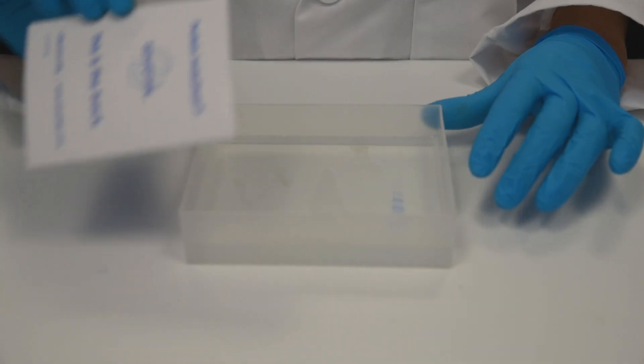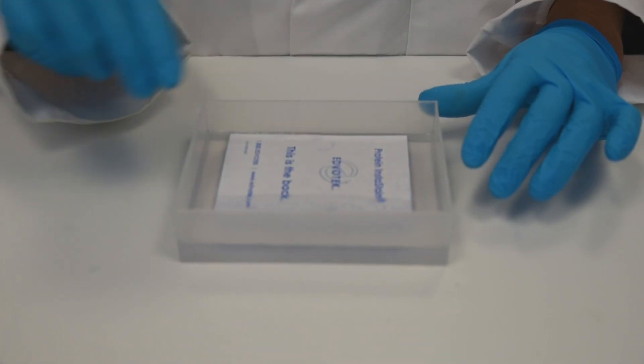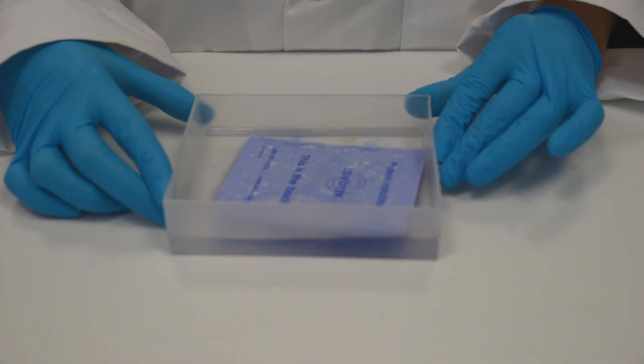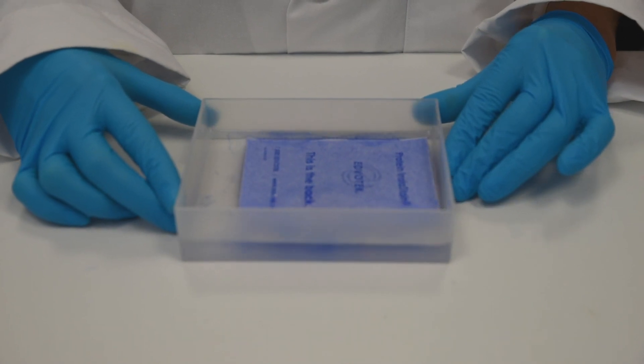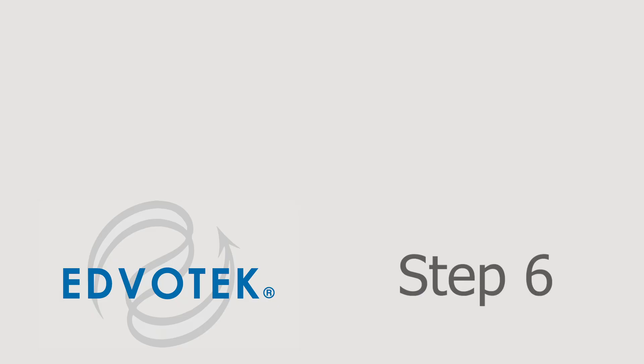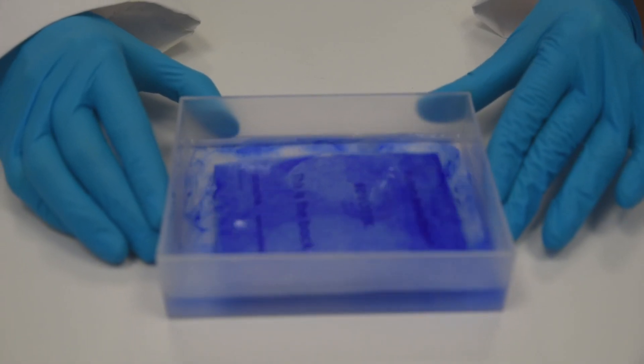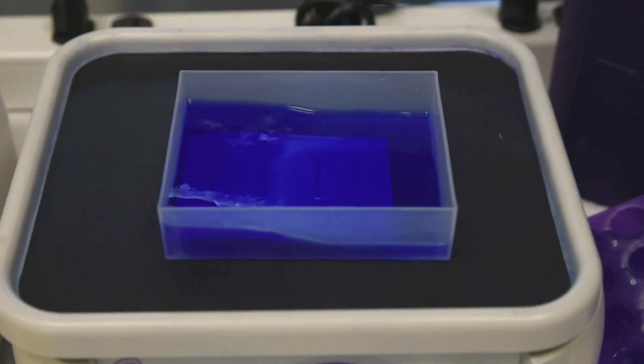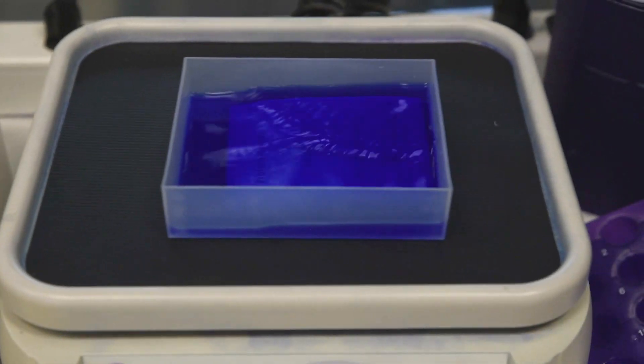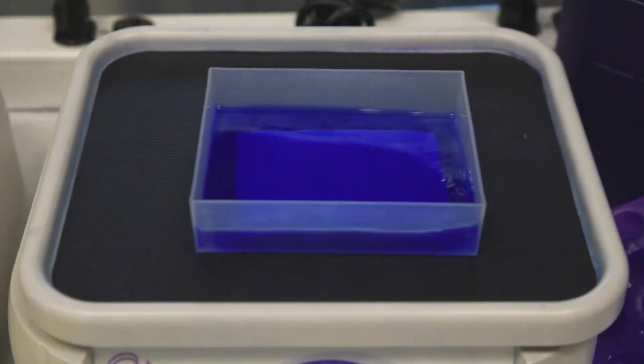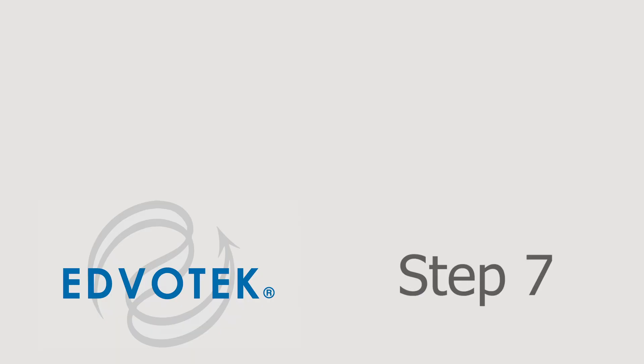Step 5: Gently float a sheet of protein instastain with the stain side down in the staining-destaining solution. Step 6: Allow the protein instastain paper to stain the gel for about 1 hour at room temperature with gentle, occasional, or continuous agitation.